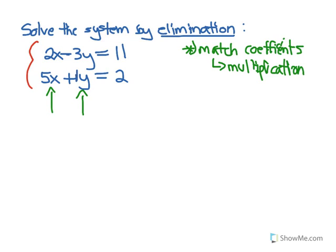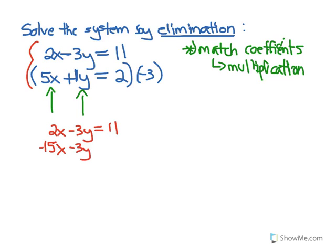Make sure you realize there's a positive 1 here — we don't usually write it, but it's there. So what would I multiply to match coefficients? I'm going to multiply the second equation by negative 3, because that will make the 1 become negative 3 (1 times negative 3 is negative 3), and then we'll be matching. So rewriting: the first equation remains 2x minus 3y equals 11. The second equation becomes negative 15x minus 3y equals negative 6.